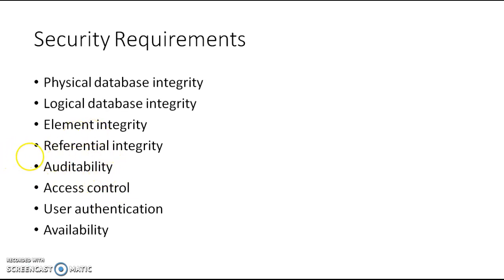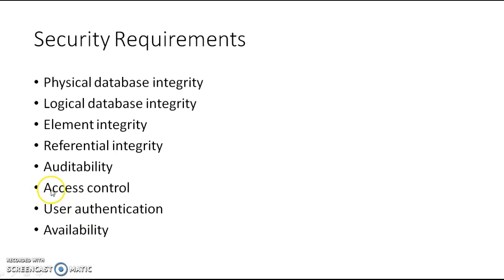Access control determines who is allowed access to different tables, databases, or views. There can be guest users, admin users, backup users, and power users. Authentication is about verifying which person should be given access, while access control is about which object (table or file) can be accessed and what privileges exist - read access, write access, and execute access. Access control relates to authorization; authentication relates to user credentials and privileges.